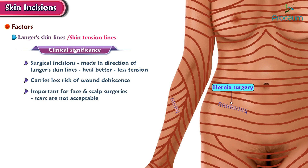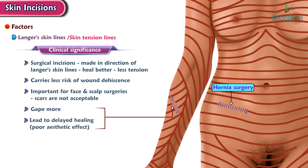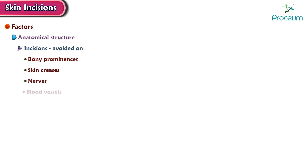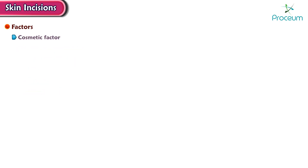Cuts or wounds perpendicular to Langer's lines gape more and can lead to delayed healing with poor aesthetic effect. Cutaneous and subcutaneous tissue atrophy develops parallel to these lines. Anatomically, incisions should be avoided on bony prominences and skin creases if possible, and underlying structures such as nerves and blood vessels should be considered.